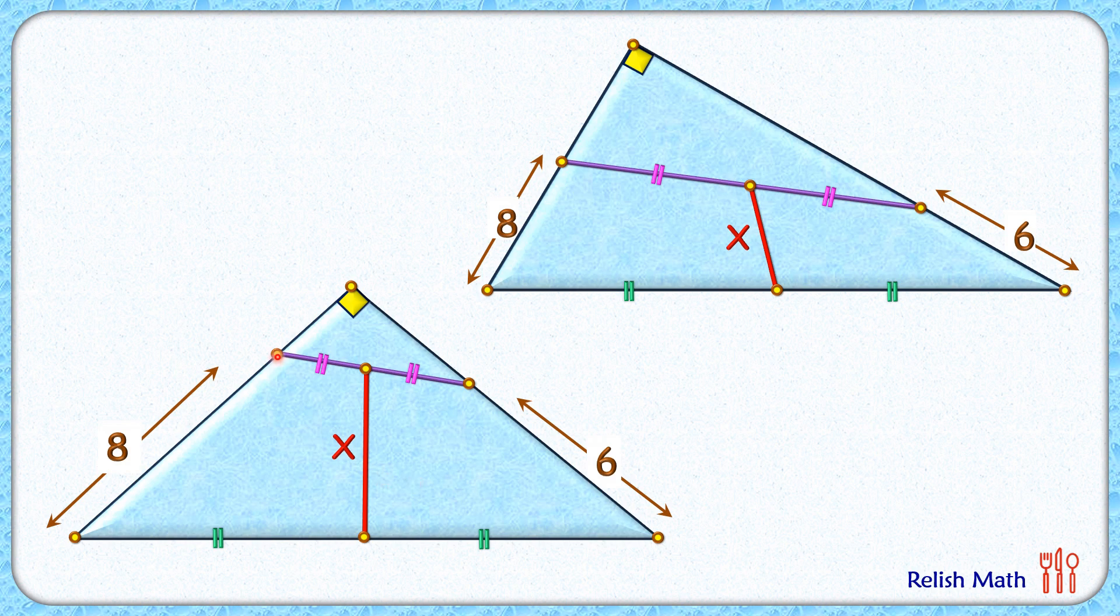How about if we reduce the length of this purple line segment further, or we make this purple line segment a point line segment? Then the midpoint of that point will also lie on the same point only. So let's reduce it to a point line segment such that it will lie on the vertex itself.